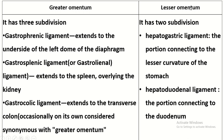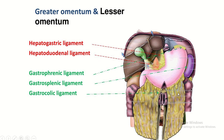The lesser omentum has two sub-divisions. This portion is known as the hepatogastric ligament, and this portion is known as the hepatoduodenal ligament.